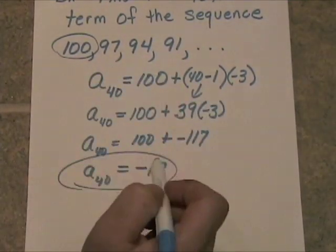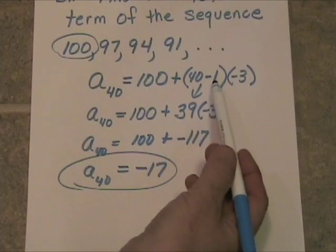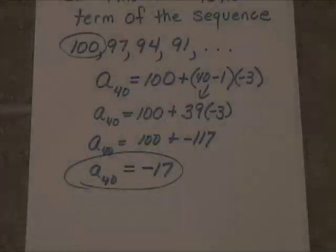So explicit formula: bang, you plug in the 40, you subtract one, you multiply, you've got it.